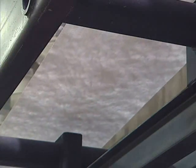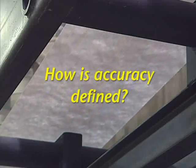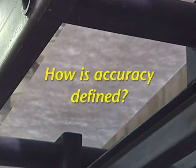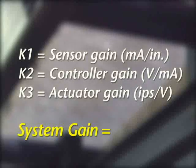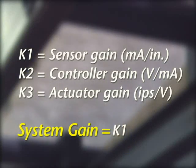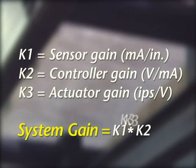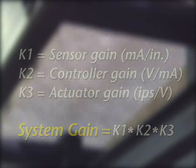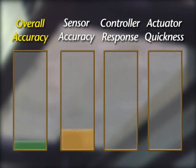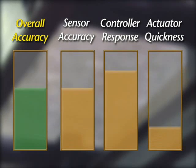The way to determine the accuracy of a web guide is to determine the collective gain of the web guide system. The overall accuracy is calculated by multiplying the sensor gain by the controller gain by the actuator gain. This means that the more accurate the sensor, the more responsive the controller, and the quicker the action of the actuator, the higher the overall accuracy.